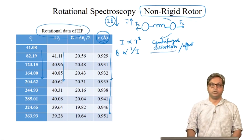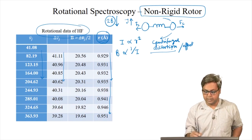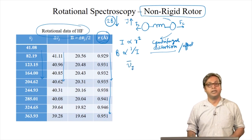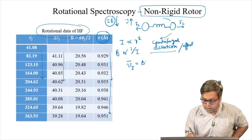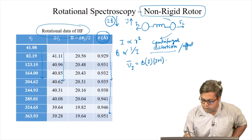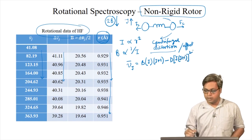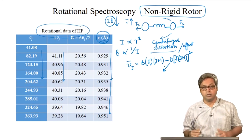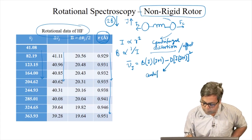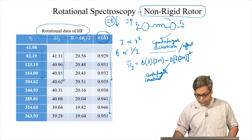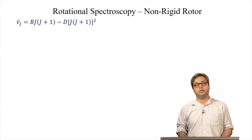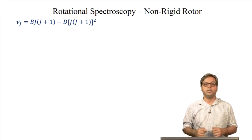Thus, for a non-rigid rotor, the energy expression ν̄(J) is given by B·J(J+1) minus D·[J(J+1)]², where D is called the centrifugal distortion constant. Let us try to understand the origin of this equation using a simple approach.